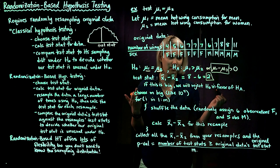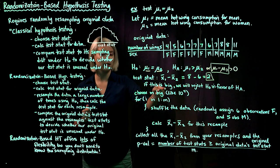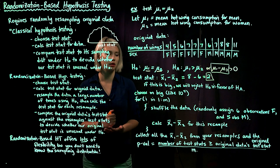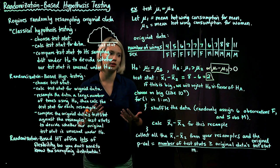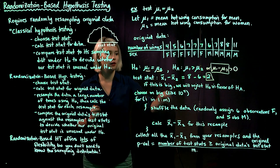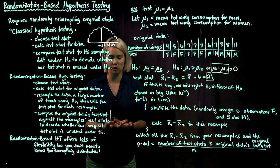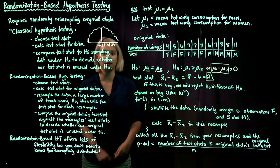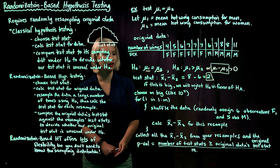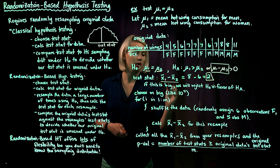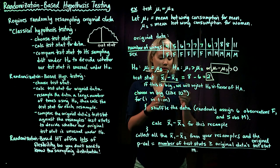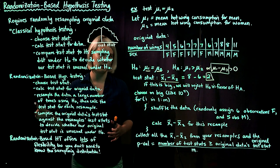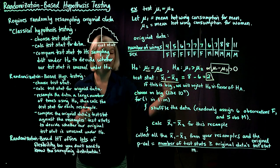Our big question is: is this value of 2 a lot, or is it not very much? If our test statistic x̄₁ − x̄₂ = 2 is big compared to the test statistics we would get under the null hypothesis — where the two means are equal — then we're going to reject the null hypothesis that men and women eat an equal number of hot wings on average, in favor of the alternative that men eat more.